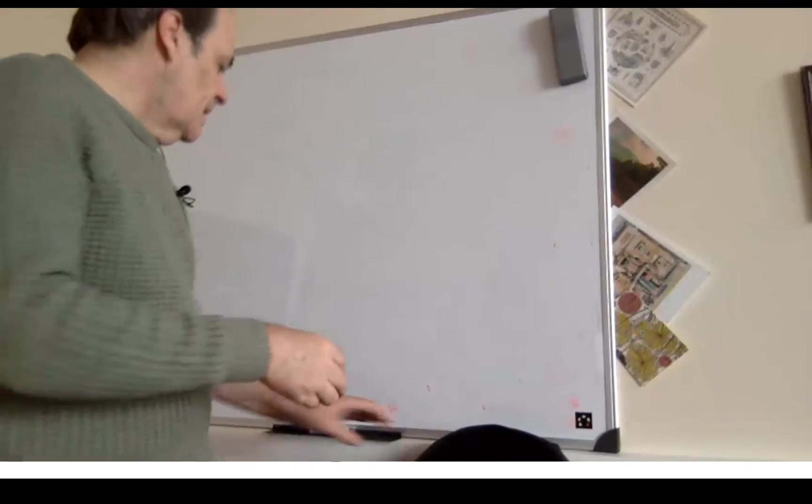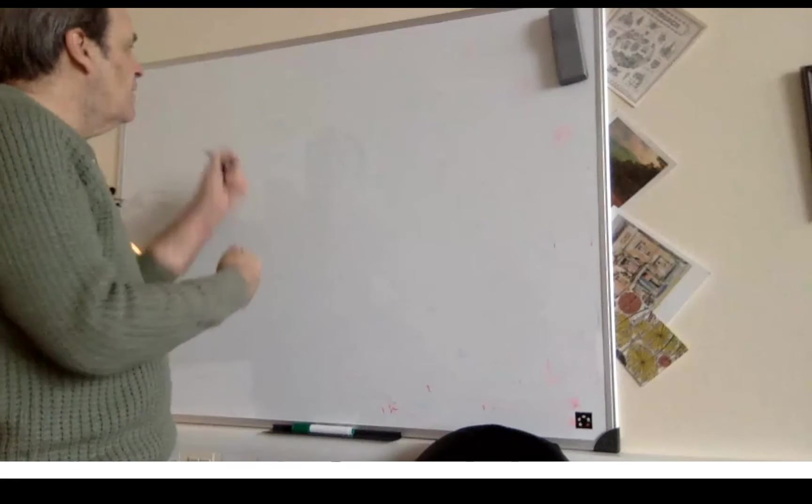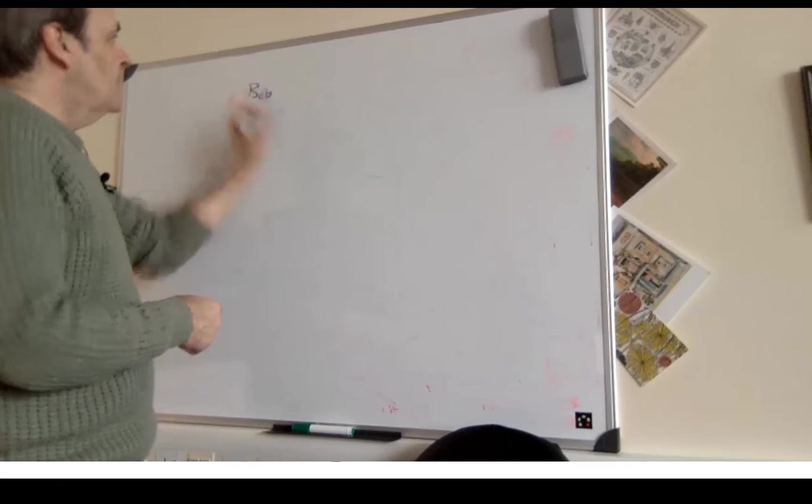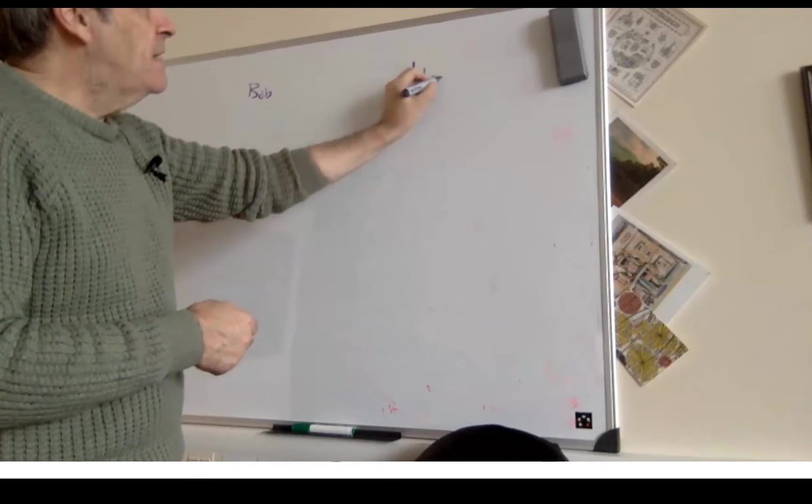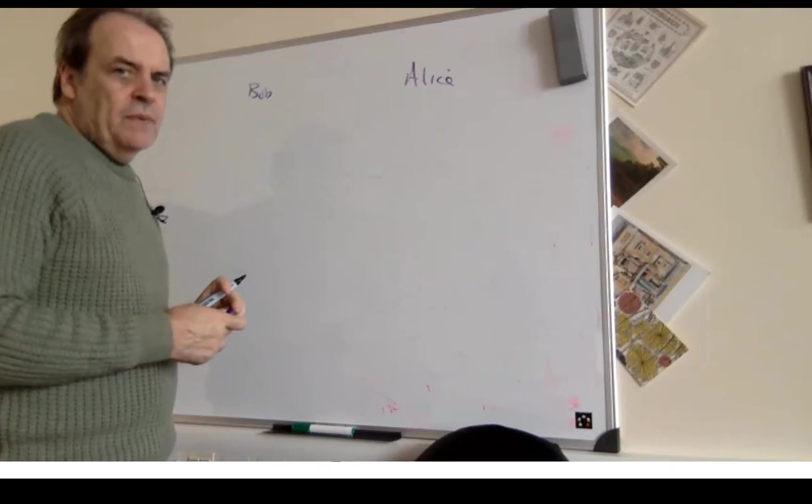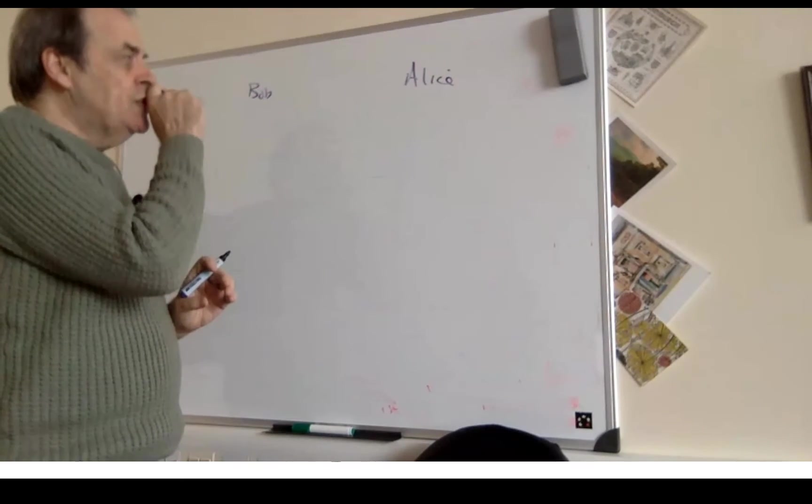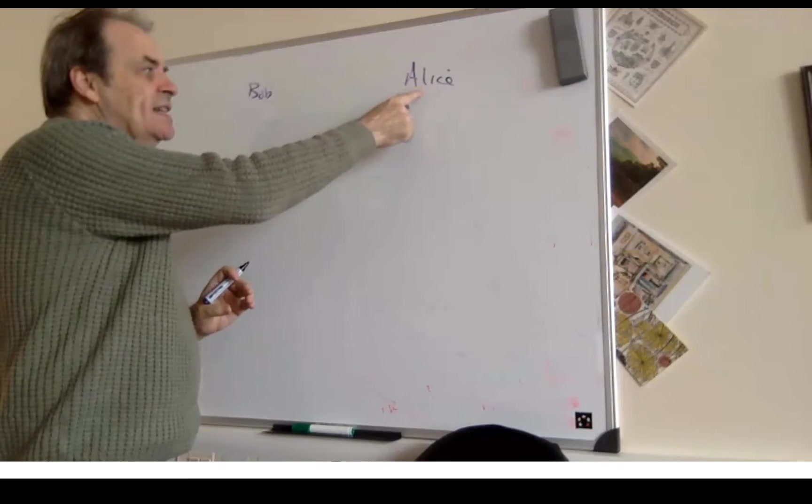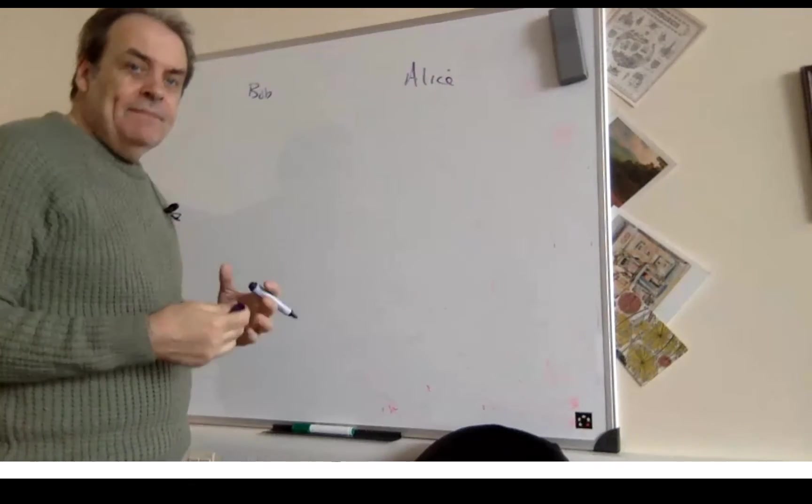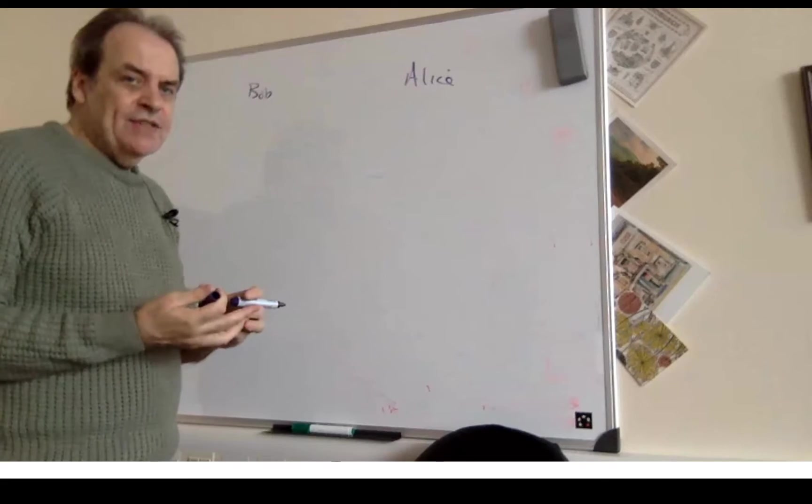If we think about it, we have Bob here and over here we have Alice. What we want to do is make sure that Alice will take a certain amount of time or work to be able to do the task.